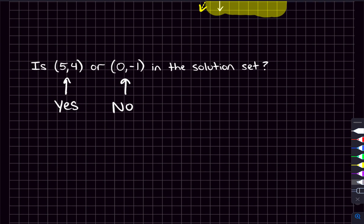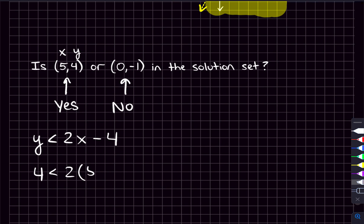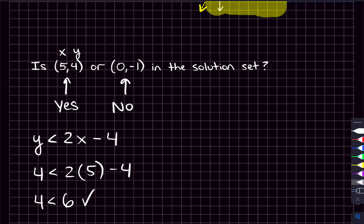That inequality is y is less than two x minus four. So if you plug in the point five comma four — five is the x, four is the y — then we get: four is less than two times five minus four. And we'd expect this to work. Two times five is ten, minus four is six. And is four less than six? Yes. So it does end up working.